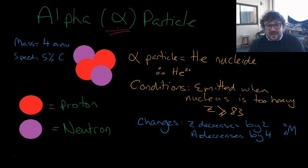The changes in this case: Z, which is the atomic number, is decreased by 2 - that's the number of protons. The atomic mass is decreased by 4. You can see it because you've got two protons and two neutrons. A is the atomic mass and Z is the atomic number.